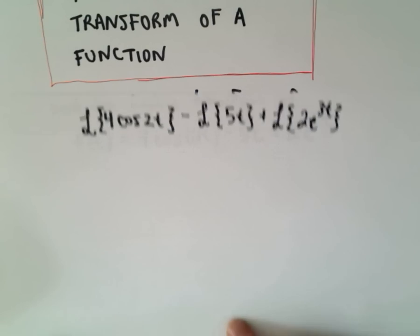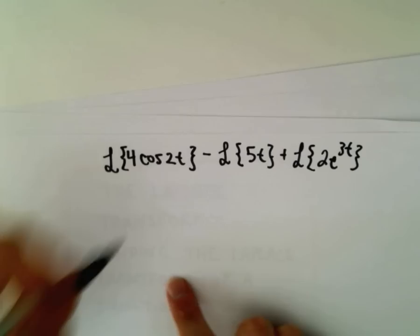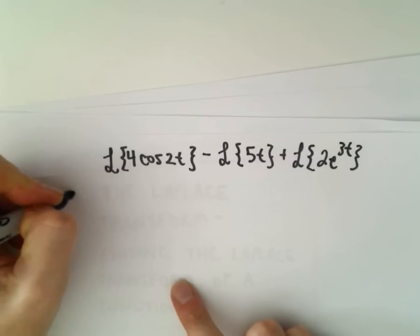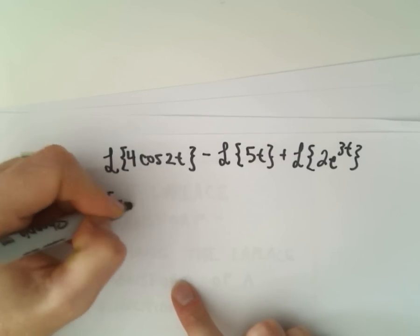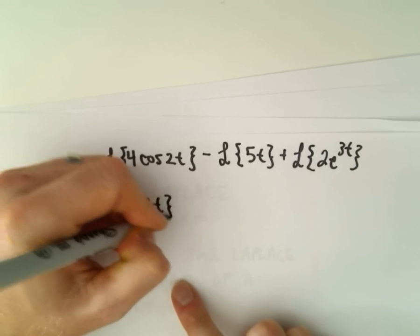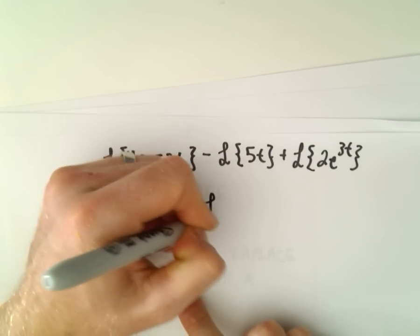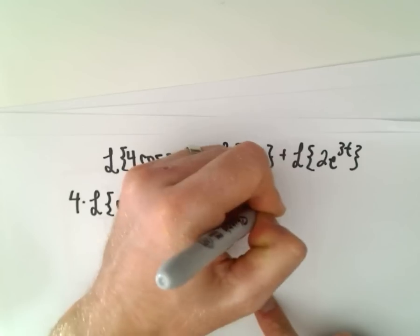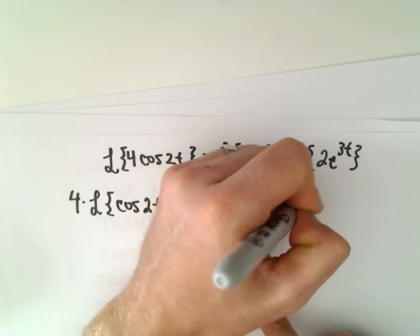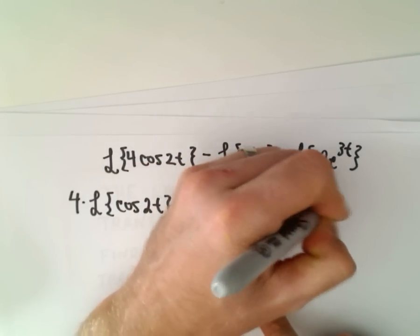But also recall that for coefficients we can simply factor the coefficients out front. So really we're just going to be left with 4 times the Laplace transform of cosine 2t minus 5 times the Laplace transform of t plus 2 times Laplace transform of e to the 3t.